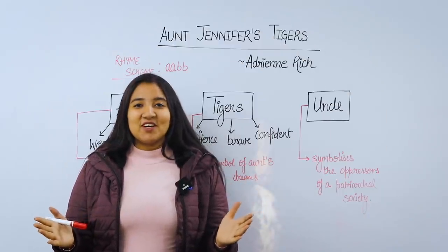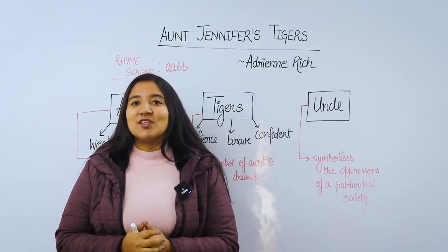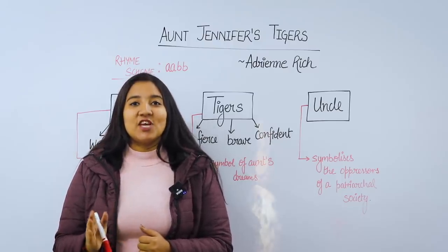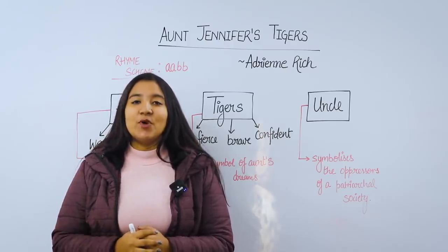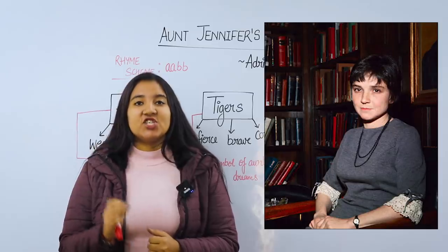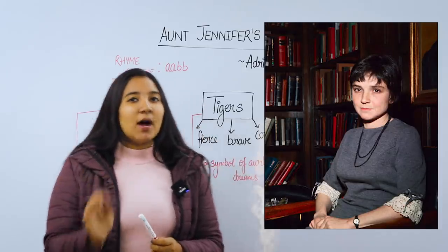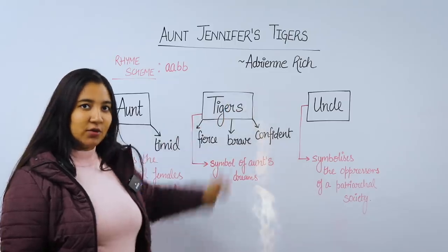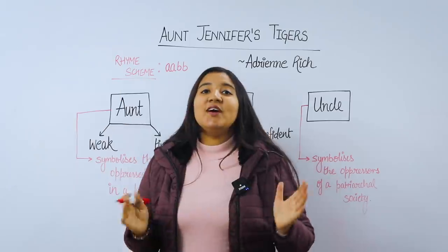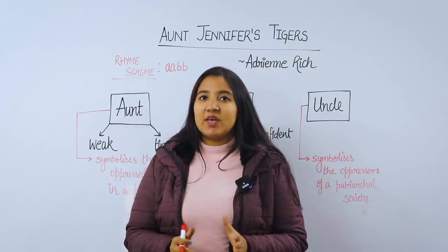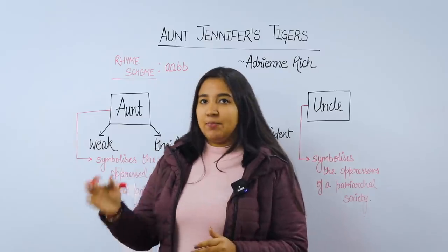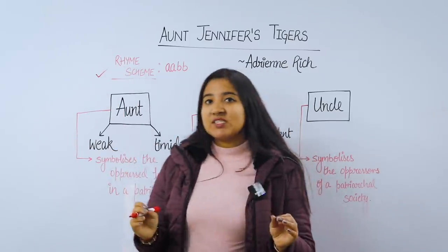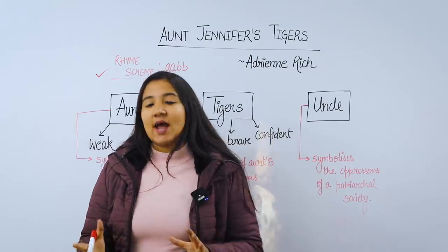Hello everyone, welcome to my Kaksha. I am Ashita and today we will study your last poem, Aunt Jennifer's Tigers, which is by Adrienne Rich. Please make sure that you have the correct spelling. This poem has a very simple rhyme scheme which is A-A-B-B. This is a simple poem of 12 lines and we will wrap it up quickly.